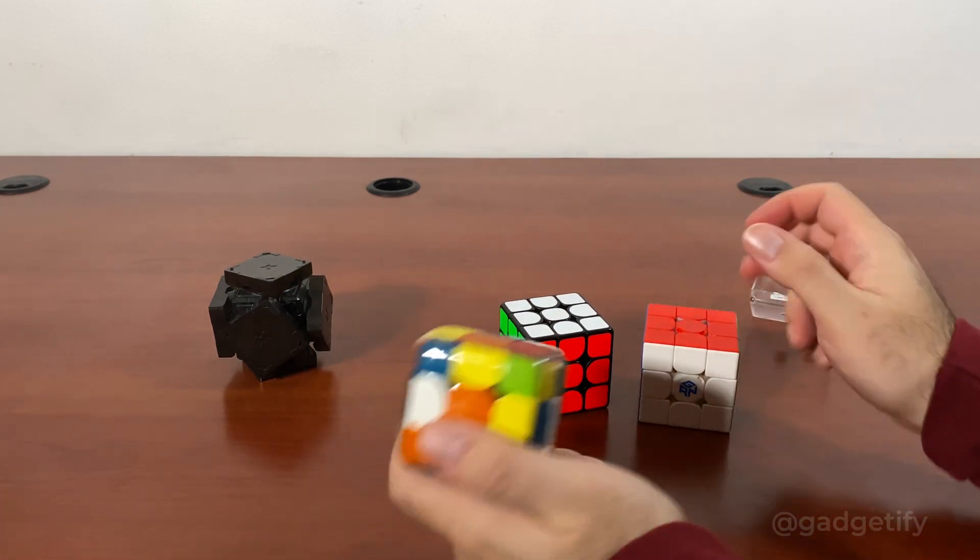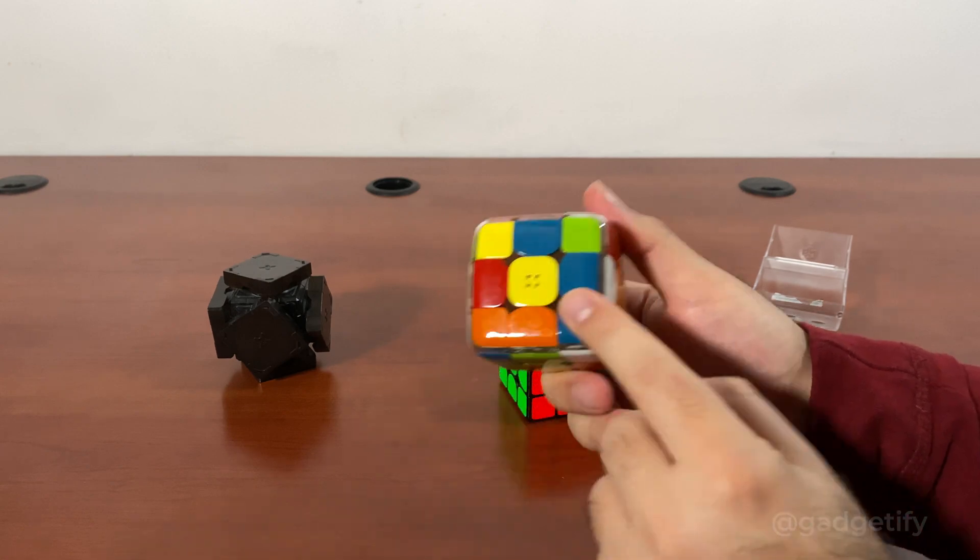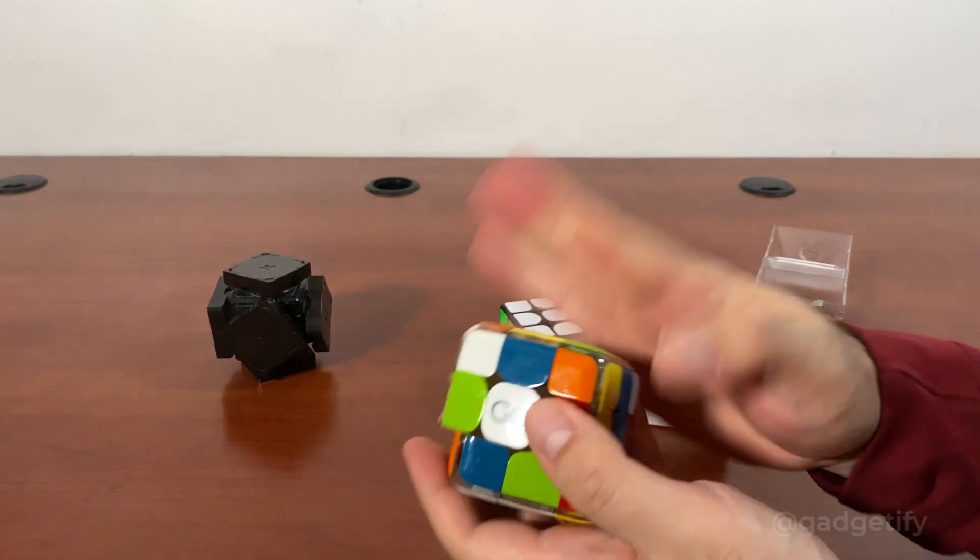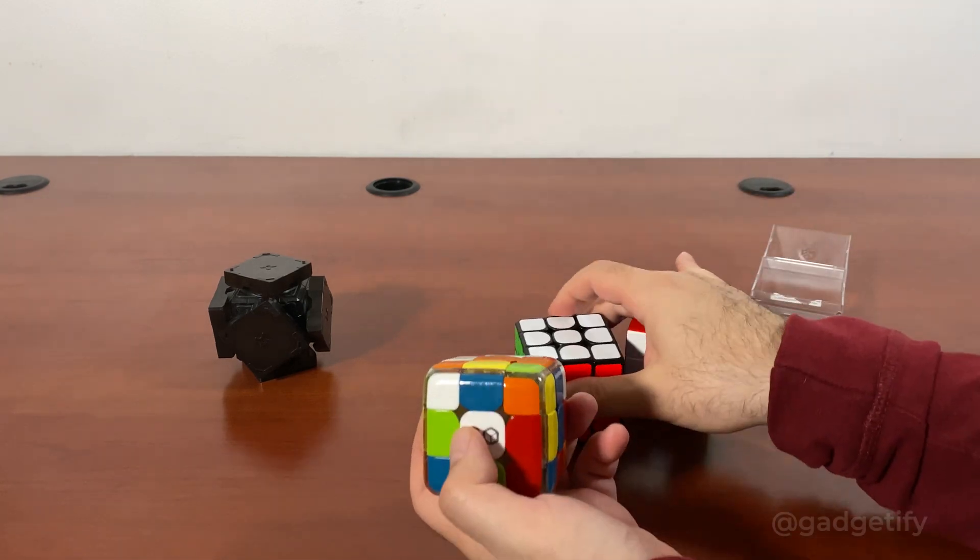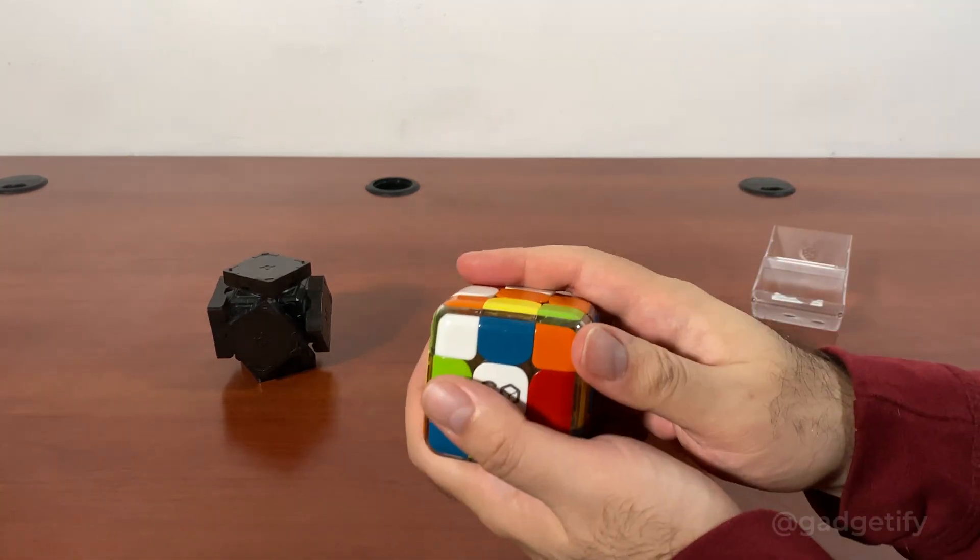This is the GoCube. It's another smart cube. It has a custom charging interface here. And this one also is app connected. It has a different feel to it. I prefer this better, but this is also pretty smart and it tracks the movement in 3D.